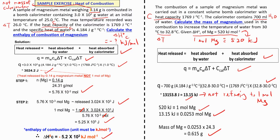The first exercise: 0.14 grams of magnesium metal is burned — this is not the mass of the calorimeter. The bomb calorimeter contains water, so straight away we write MC∆T. Then we have the temperature change, and it also gives us heat capacity, so we write C∆T. In the formula, there are two things: water and heat capacity.